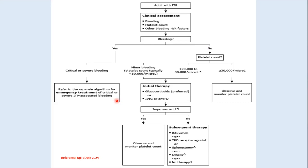The management algorithm for ITP in adults first considers whether the patient is bleeding and what the platelet count is. If the platelet count is low and the patient is actively bleeding severely, we must immediately manage with IV steroids, IVIG, and RH immunoglobulin. If bleeding is minor and platelets are less than 50,000, or if the patient is not bleeding but platelets are below 20,000 to 30,000, initial therapies include glucocorticoids and IVIG. If there is improvement, we observe and monitor. If there is no improvement, we proceed to second-line treatments like rituximab, TPO receptor agonists, or splenectomy. If the platelet count is more than 30,000, most patients can be observed.